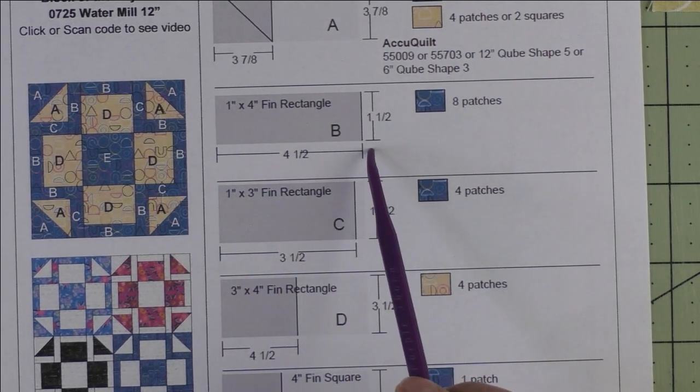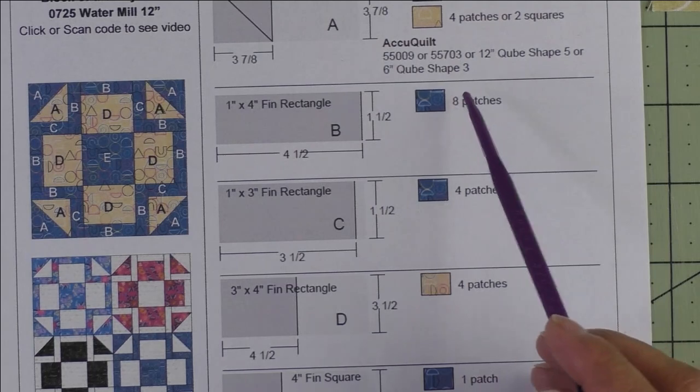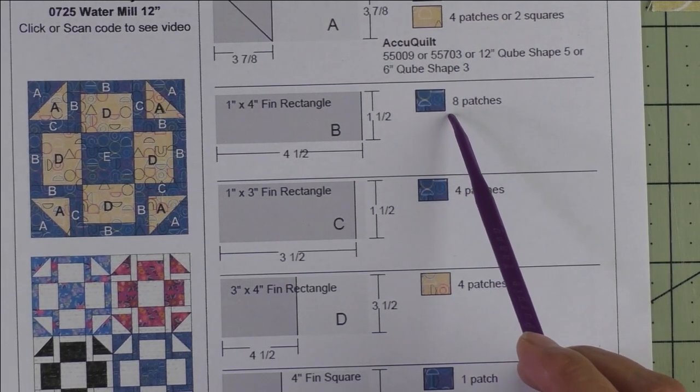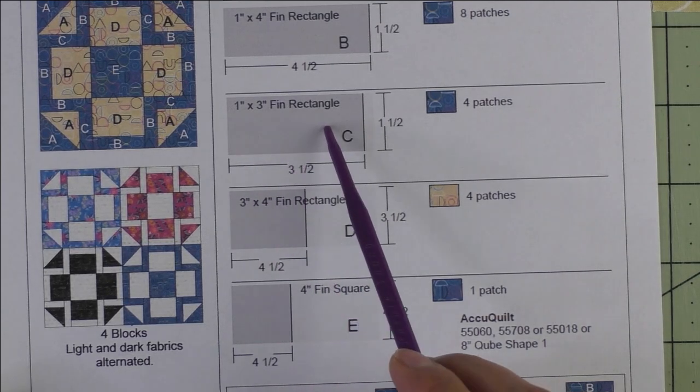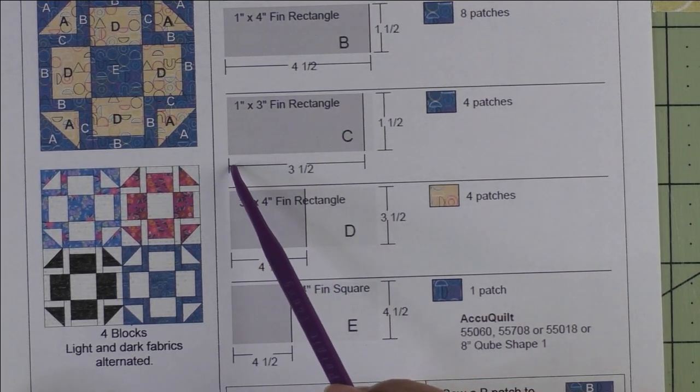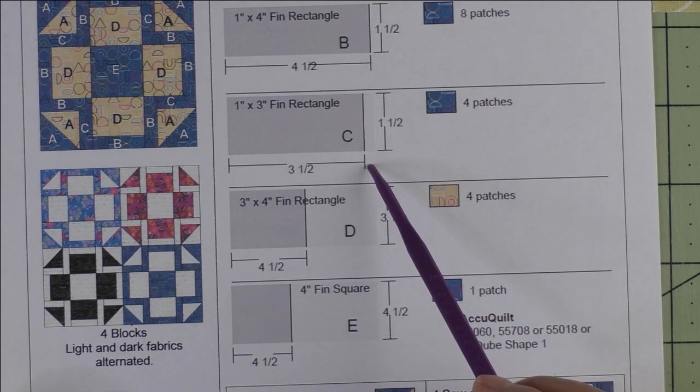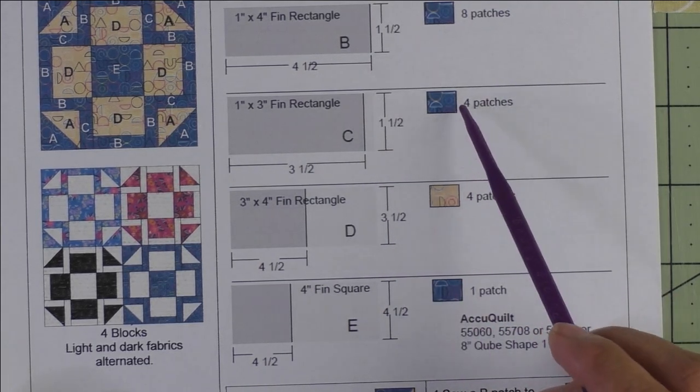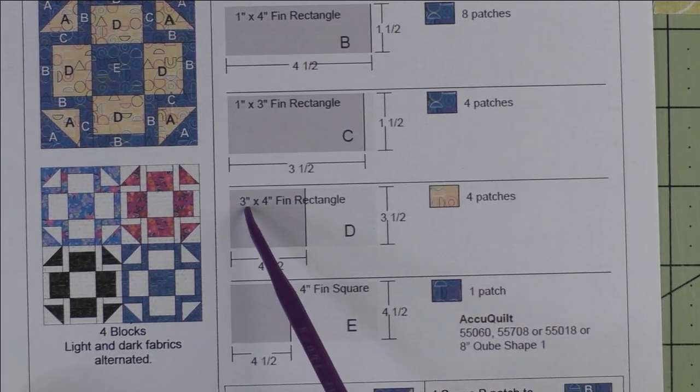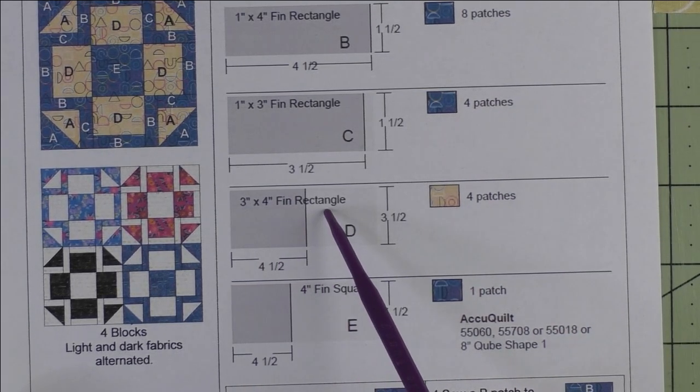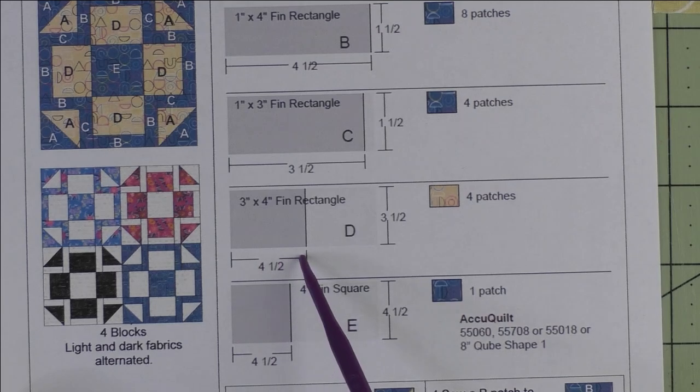We'll need four patches of the dark fabric. Patch D is a three inch by four inch finished rectangle. We cut four and a half inch by three and a half inch rectangles and we'll need four patches of the light fabric.